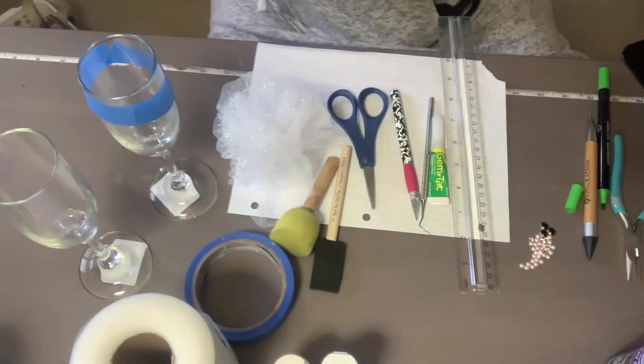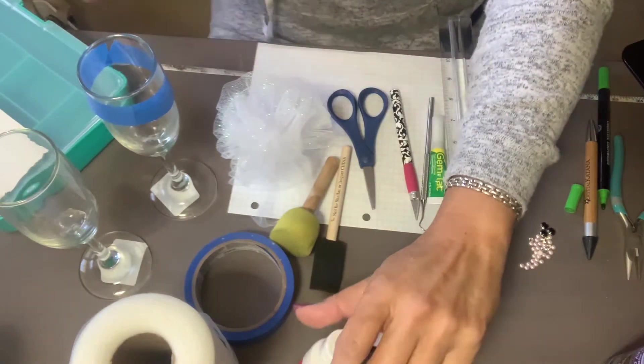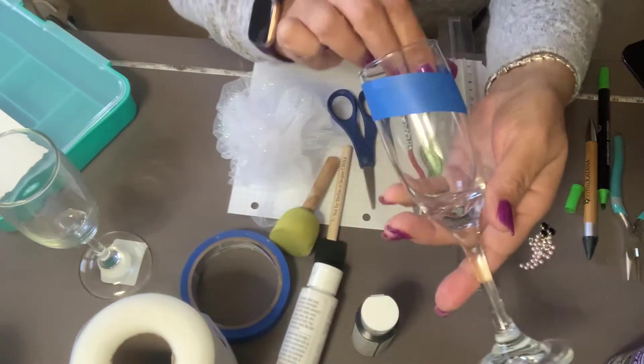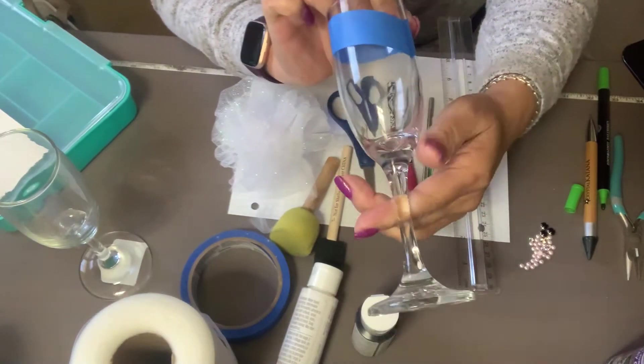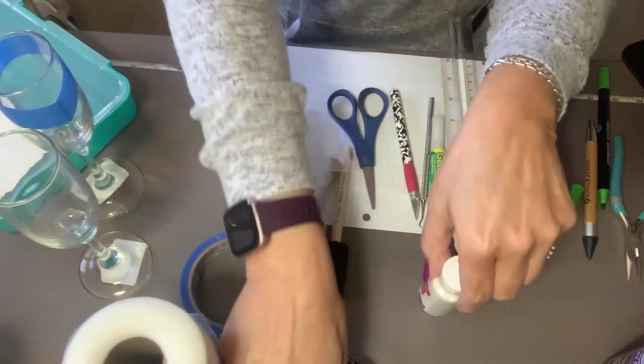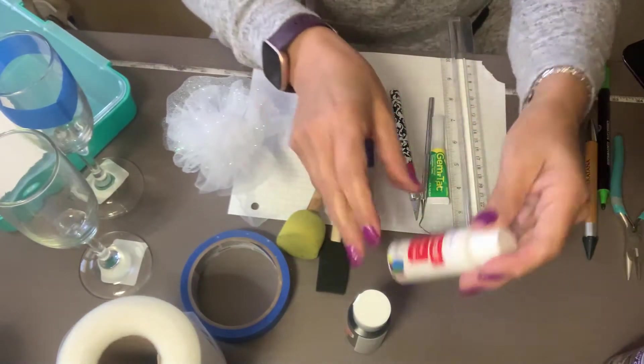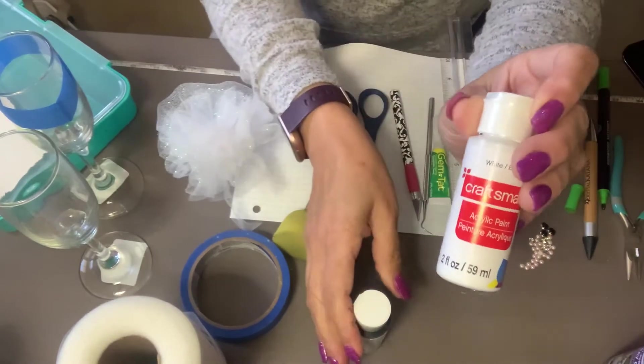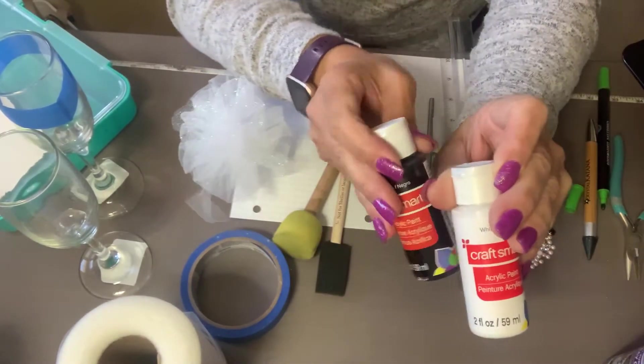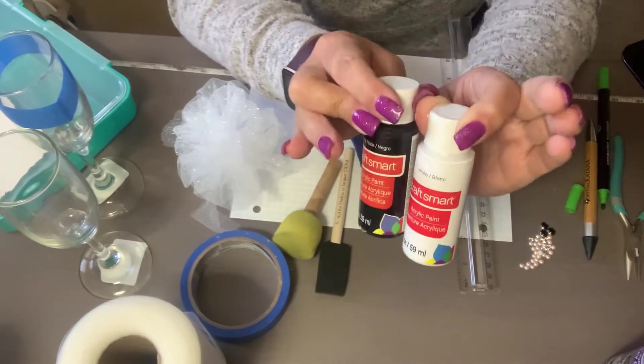So for these glasses, you're going to need two glasses. I got this at the Dollar Tree. You need to clean them and erase your fingerprints. You're going to need two acrylic paints, a white and a black, or whatever combination you want depending on the bride and the groom.